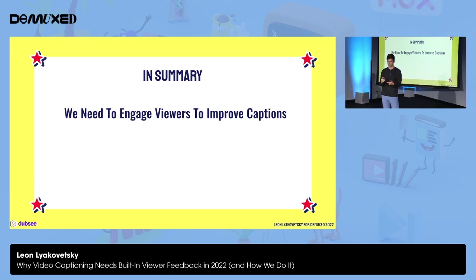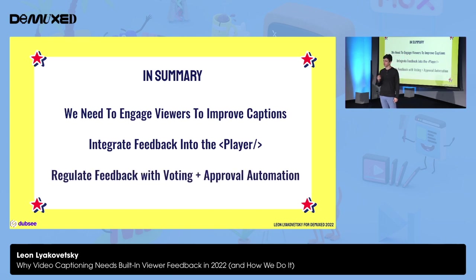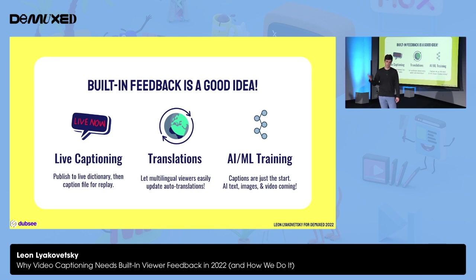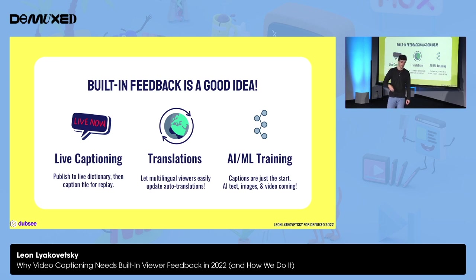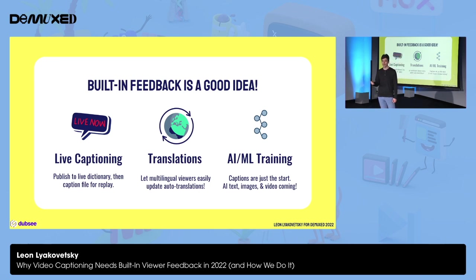In summary, we need to engage viewers to improve captions. I propose integrating feedback into the player, and in the back end, regulating that feedback with voting and approval automation. Built-in feedback is a good idea and gives us a template we can use across many other applications. For live captioning, instead of publishing to a caption file we publish to a live dictionary, which updates the same name or phrase mentioned later in the stream — so when you get it wrong the first time, you can fix it and commit those validated changes into the replay caption file. For translation, it's a no-brainer to let multilingual viewers update auto-translations. For AI/ML training, captions are just the start of AI-generated content in front of viewers — we're going to have AI-generated text, images, and even video, and they're going to need a lot of feedback as well.